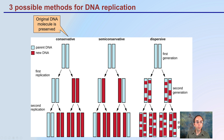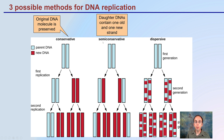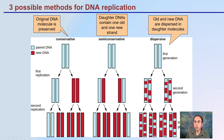In conservative replication, the original DNA molecule would be preserved — the parental DNA is still present throughout the first and second replication. In semi-conservative replication, the daughter DNA contains one old and one new strand, with one old and one new strand replicated throughout. In disruptive replication, the old and new strands are dispersed in daughter molecules in a kind of random pattern.